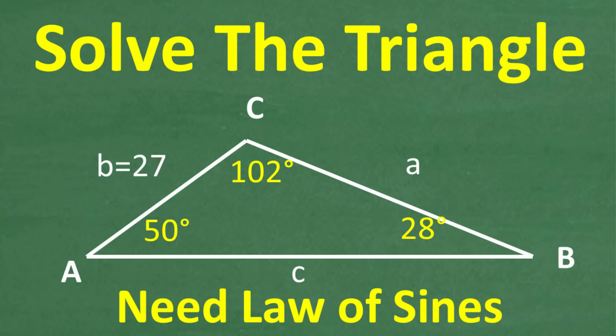But let's go ahead and take a look at this triangle problem. You can see here we have all the angles of the triangle, but we only have one length. We know the side of this triangle is 27. So we want to solve this triangle problem, which means that we want to know all the sides and all the angles. We have all the angles. We have this side, but we don't know what sides A and C are. So this is a problem for the Law of Sines.